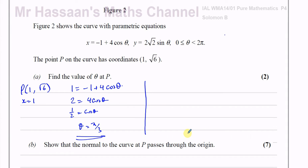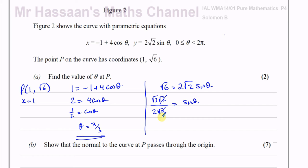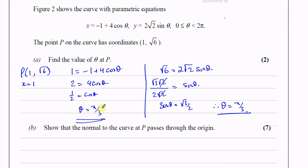If you wanted to use the y value, you could — it involves a bit more work in this case. You have root six equals two root two sine theta. Dividing both sides by two root two: root six is the same as root three times root two, divided by two root two. The root two cancels, giving sine theta equals root three over two. Taking inverse sine of root three over two in radians gives pi over three. Either method works; using x is easier here. That's part A done.